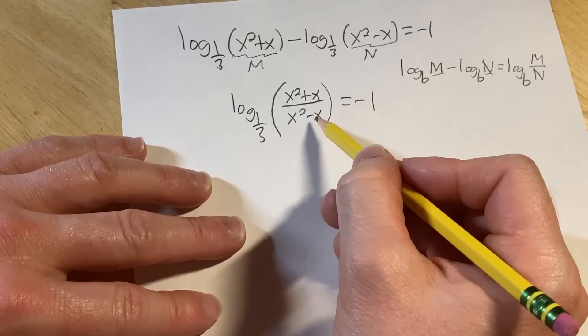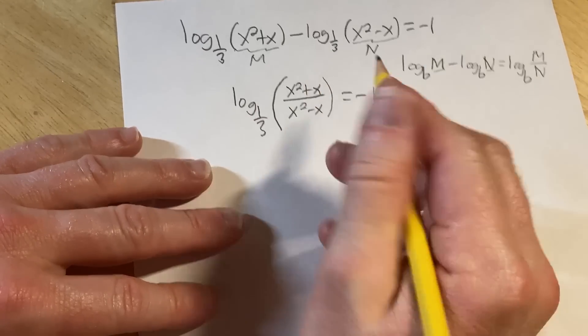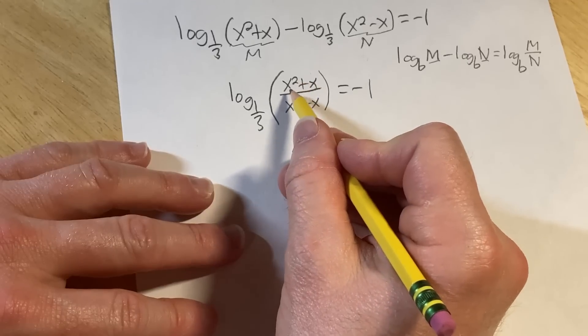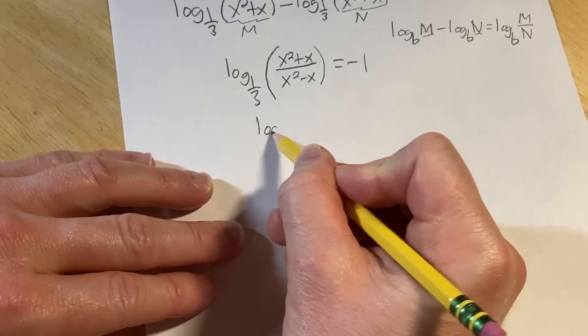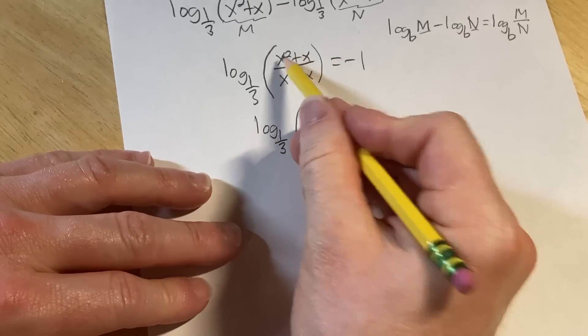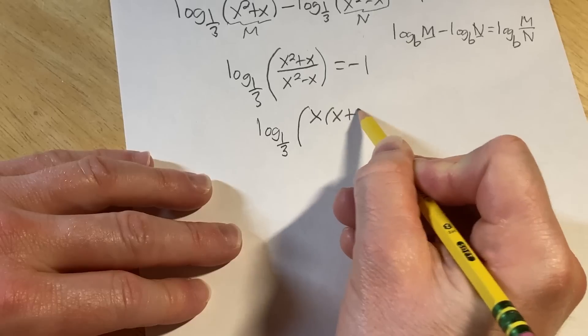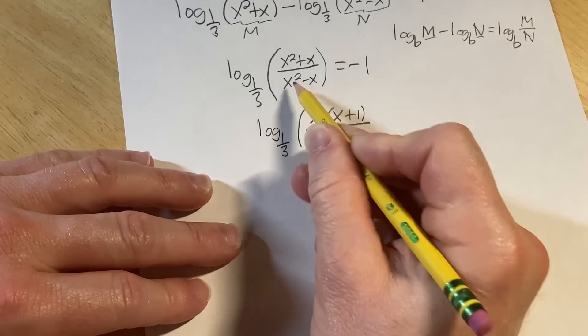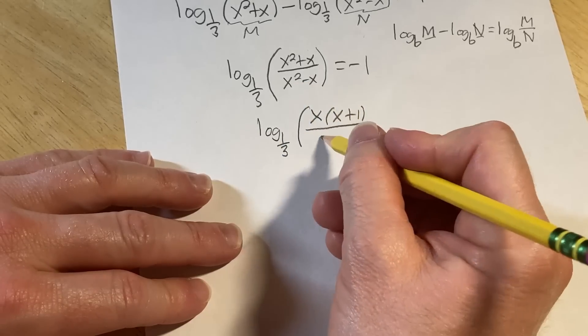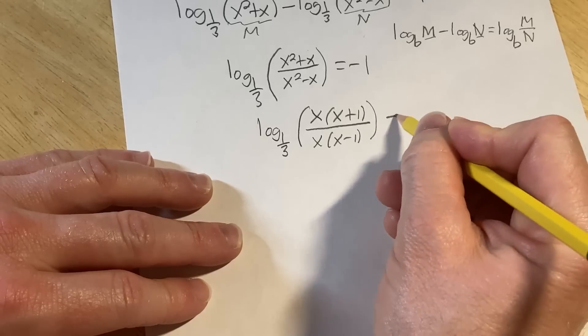Let's go ahead and do some simplification here inside this piece. This is called the argument of the logarithm, this inside piece. You probably noticed that we can pull out an x. So we have log base one-third of, let's factor out an x from the numerator, so it'll be x parentheses x plus one, over, and then we can do the same thing in the denominator, x parentheses x minus one, and that's equal to negative one.